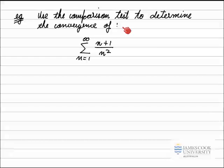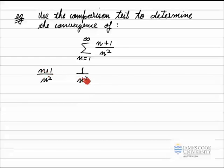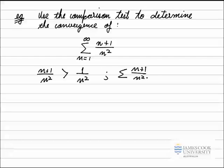Looking at this series, the dominant term is n squared. So my first choice is to compare the term n plus 1 over n squared to the dominant term, 1 over n squared. To go from n plus 1 over n squared to 1 over n squared, I've taken out the n, which makes the series on the right a lot smaller. So each term n plus 1 over n squared is greater than 1 over n squared, meaning the sum of all those terms would also be larger.